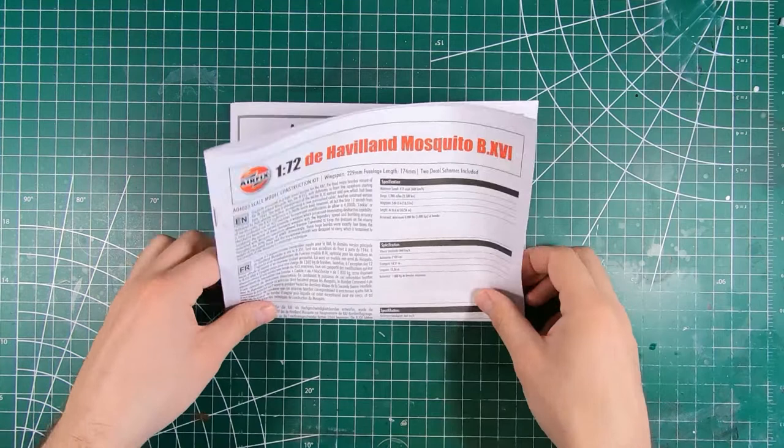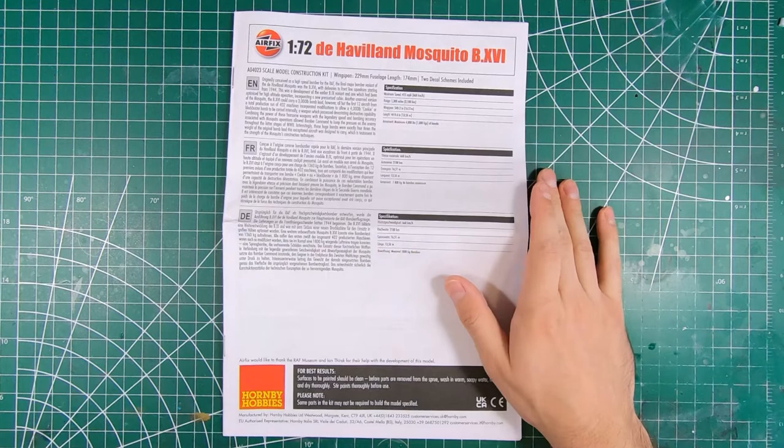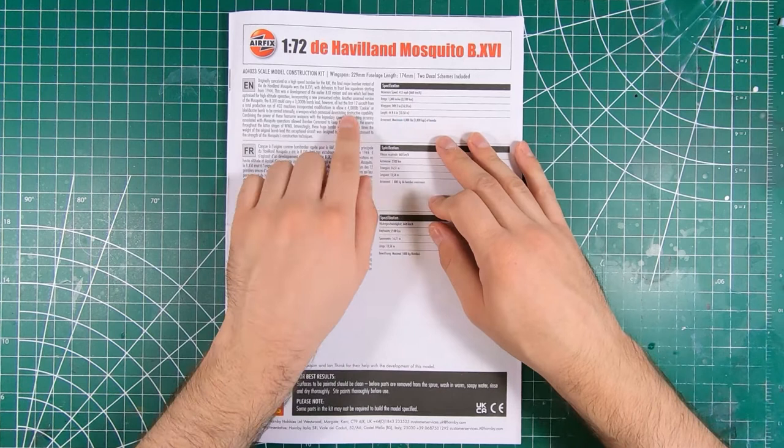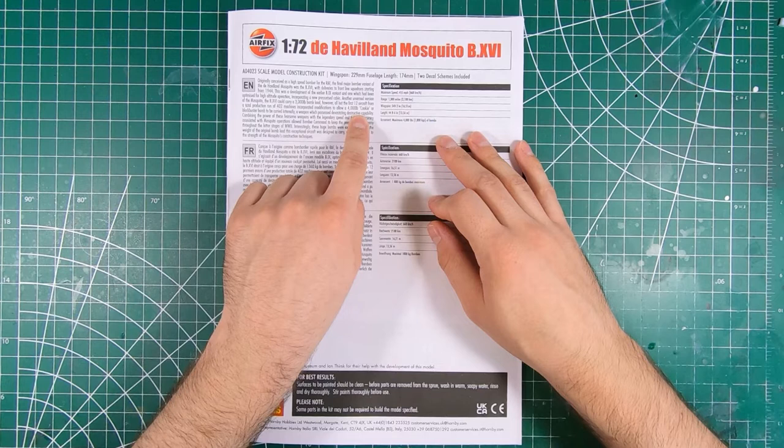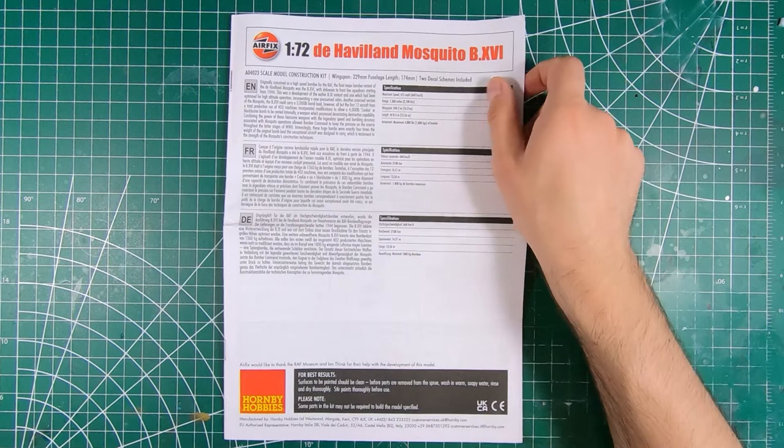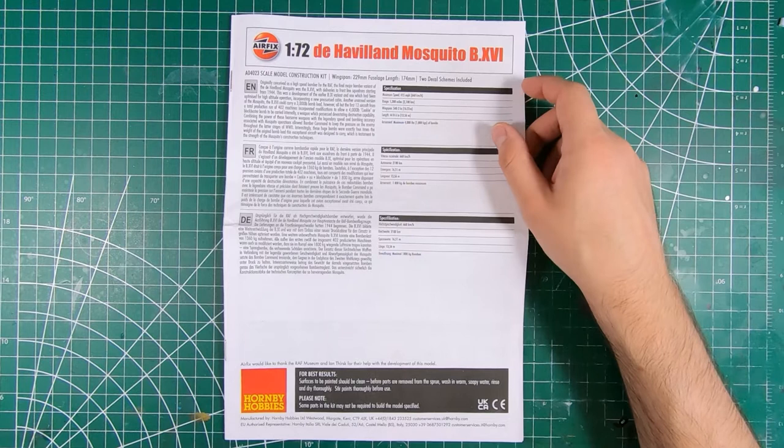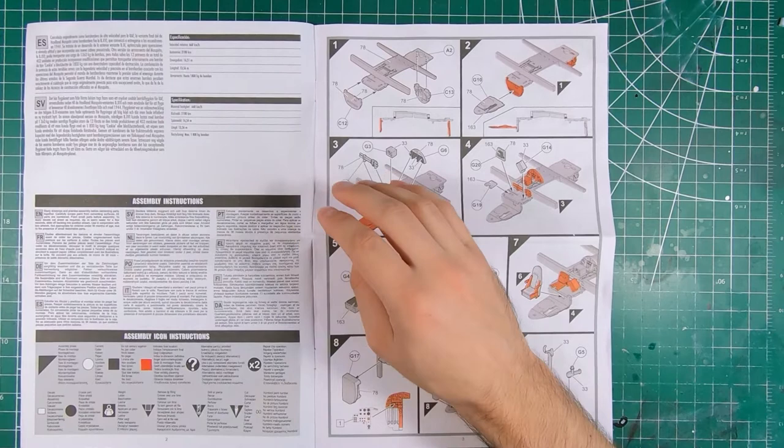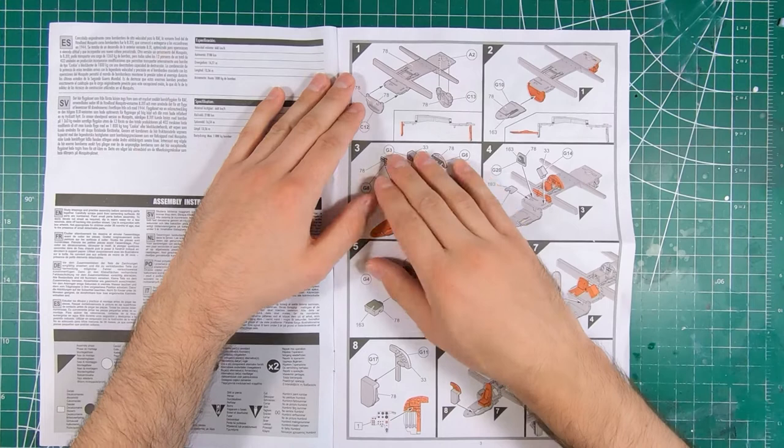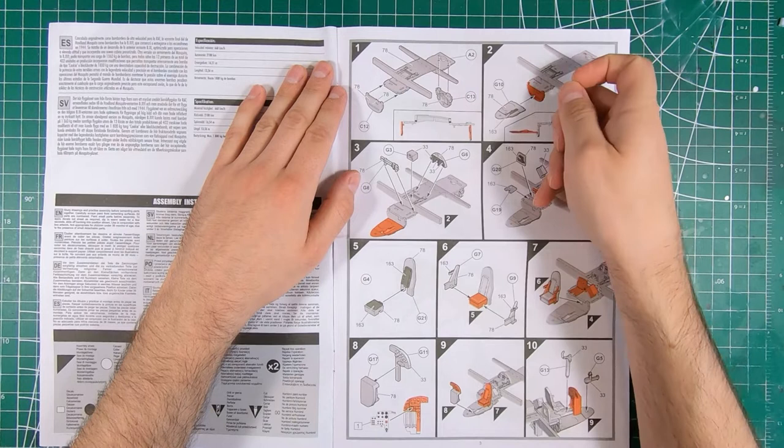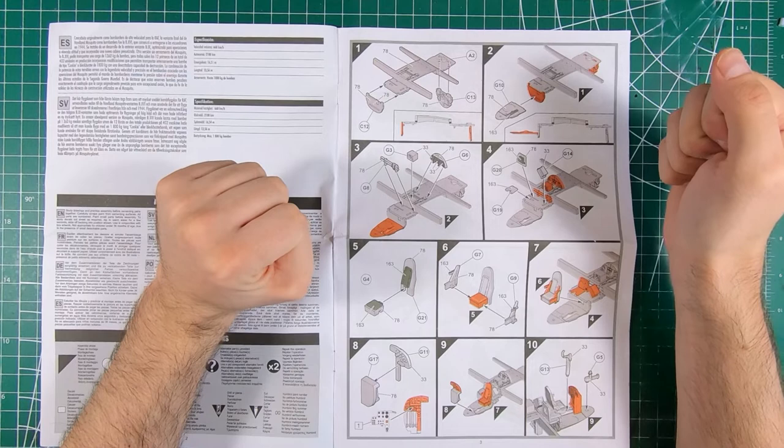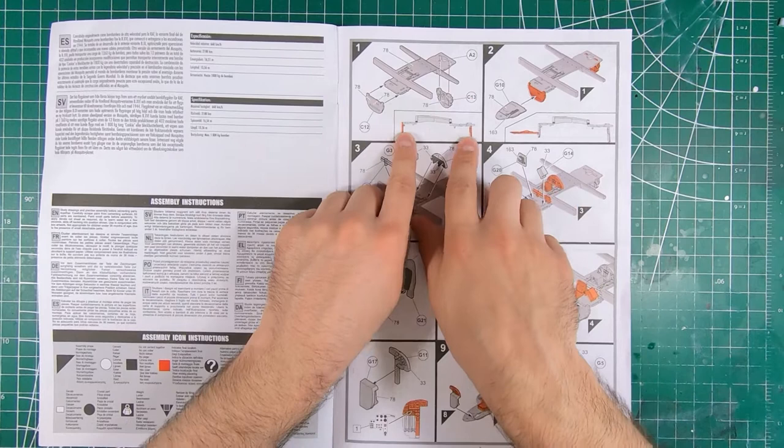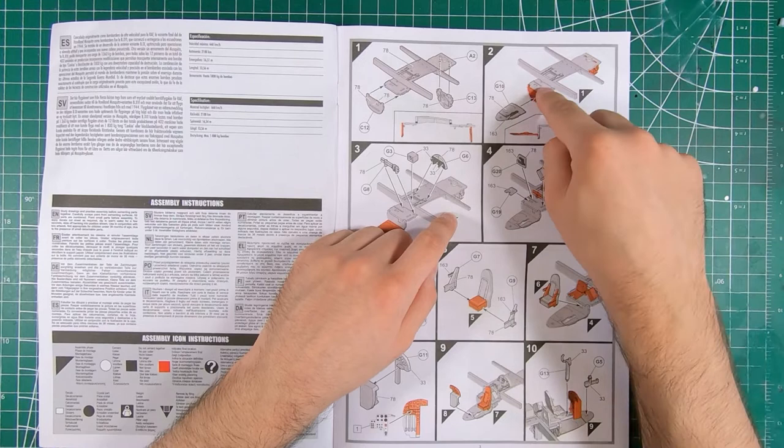And of course that leaves us with our instructions. A little historical blurb on the mosquito. And hey look, modifications to allow 4,000 pound cookie. A little bit of historical information and specifications. Best results, surfaces should be clean. So definitely, I usually ignore that, but on this one with some of that shmoo on the inside, give it a little bit of a hose down. And on to the important bits. We got our bomb bay roof slash cockpit floor slash wing spars with some bulkheads going in place. You might want to just plop this into the fuselage half to make sure these bulkheads line up where they're supposed to be.